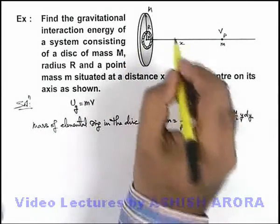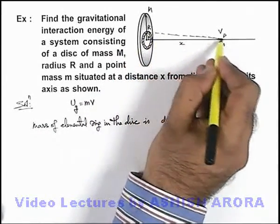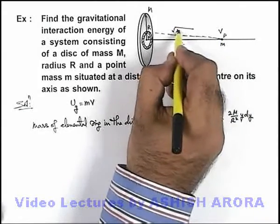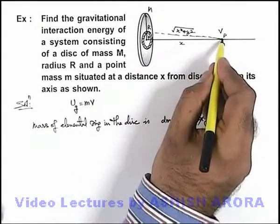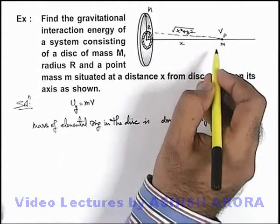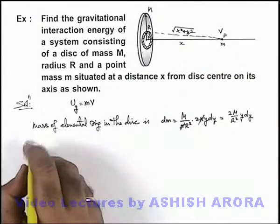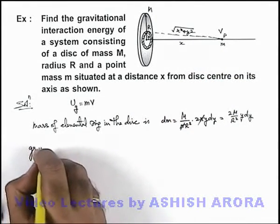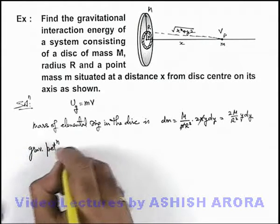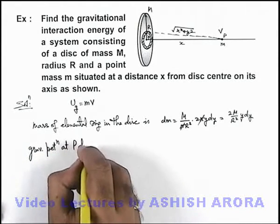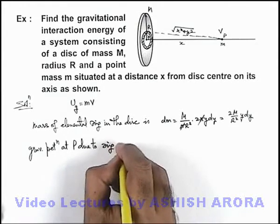From this elemental ring, every point is located at a distance of √(x² + y²) from point P. We can now write the gravitational potential at P due to the ring.